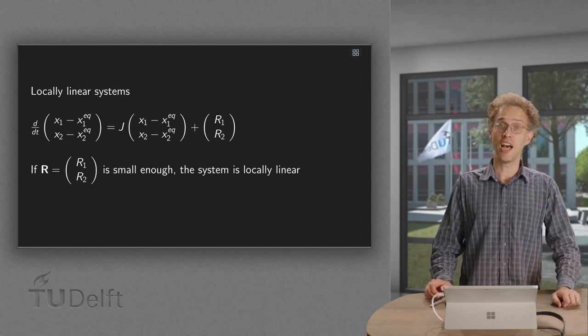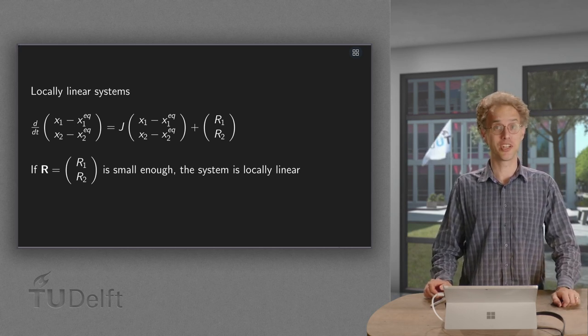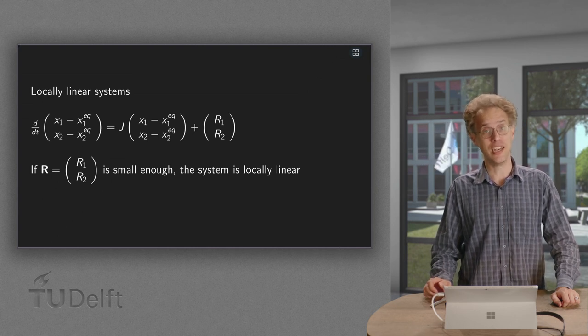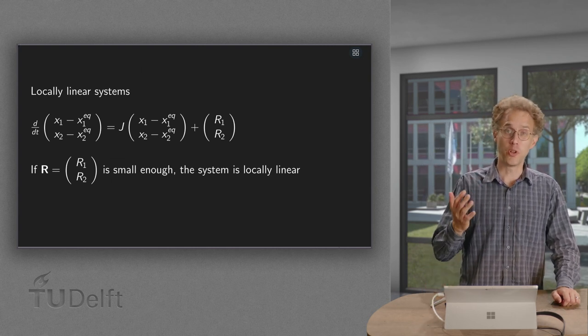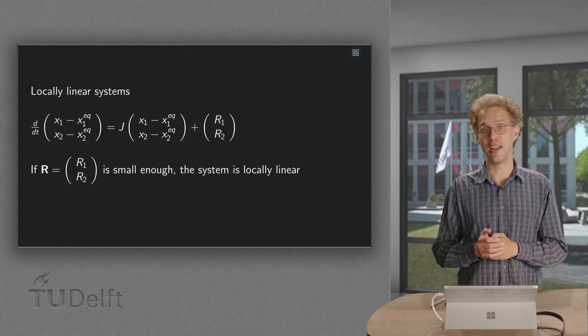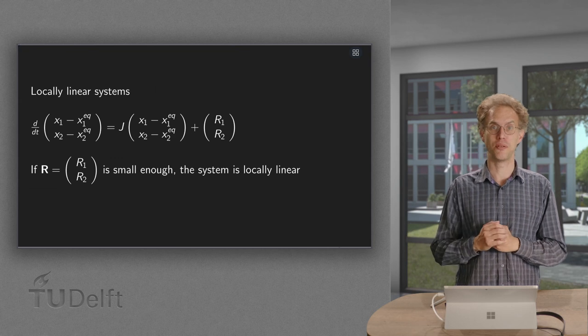We have seen how we can analyze a non-linear system by linearizing it and analyzing its linearization. But what does this information about the linearized system tell us about the non-linear system?